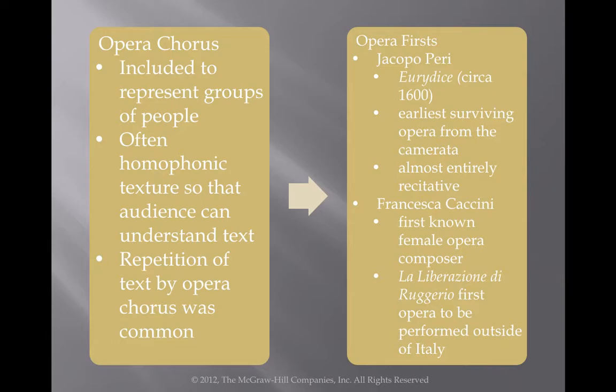Moving on, we have some opera composers you can read about in your book, starting with Jacopo Peri, who was the first composer of opera — or has the earliest surviving opera — from the Camerata. It was almost entirely made up of recitative, and that first opera was called Eurydice.